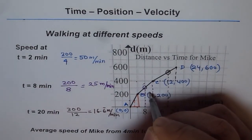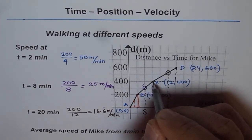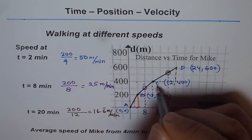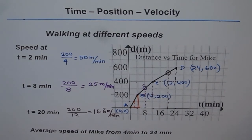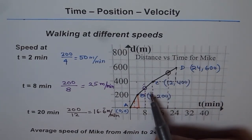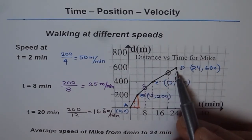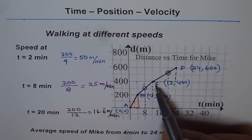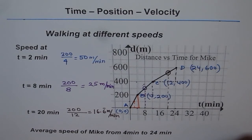It is better to make a bigger triangle with good points to find speed more accurately. For curved lines, we would draw a tangent, but for straight-line segments we simply use change in distance over change in time to find speed.